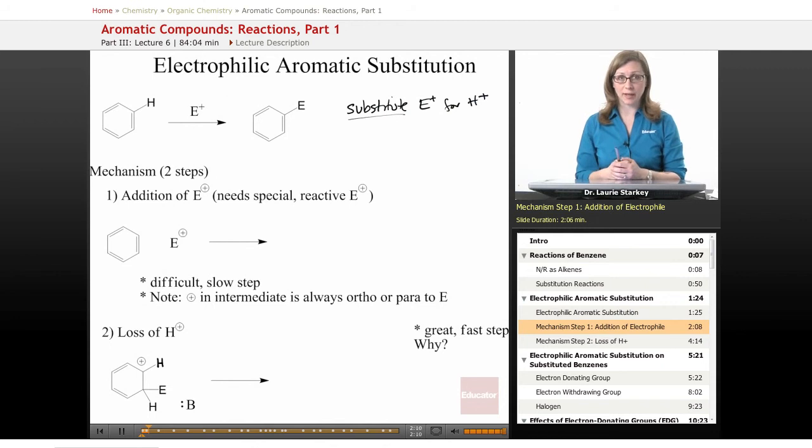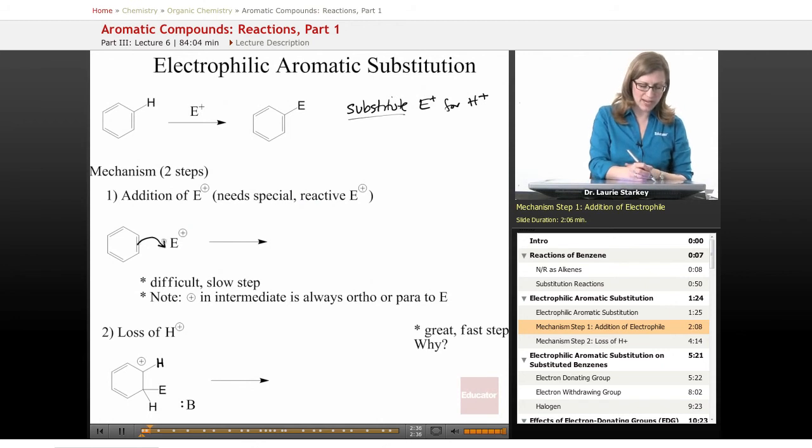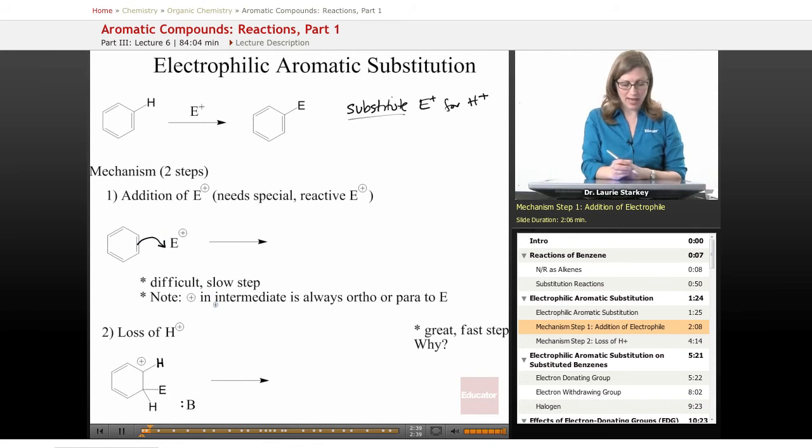Now, this is a two-step mechanism. And the very first step is addition of the electrophile. We just said how unreactive benzene is and how much it wants to have this aromatic stabilization. So this has to be a very special reactive electrophile. We're going to talk about what reaction conditions are needed to initiate this reaction. But if we do have an appropriately reactive electrophile, what can happen is one of the pi bonds in benzene can act as a nucleophile and the electrophile can add to it.